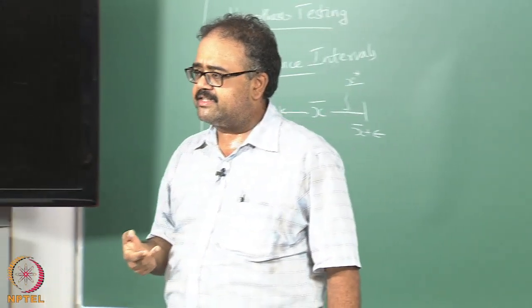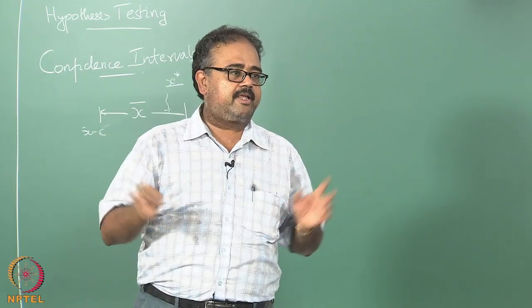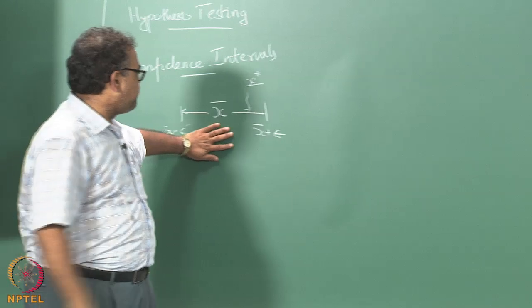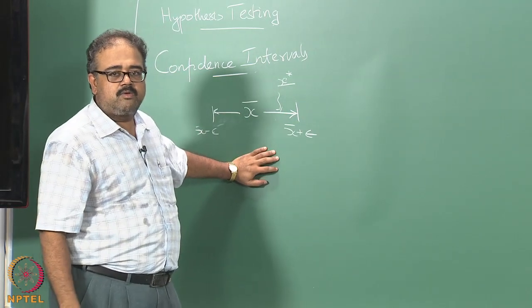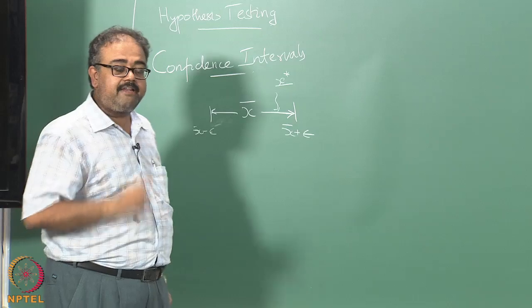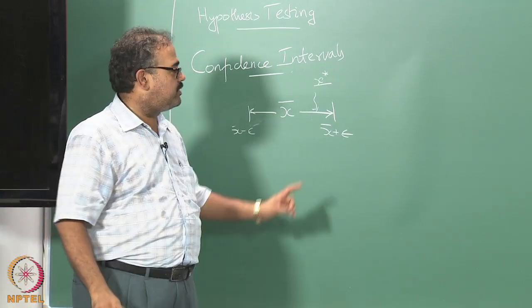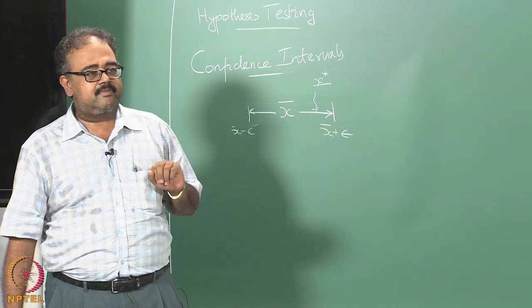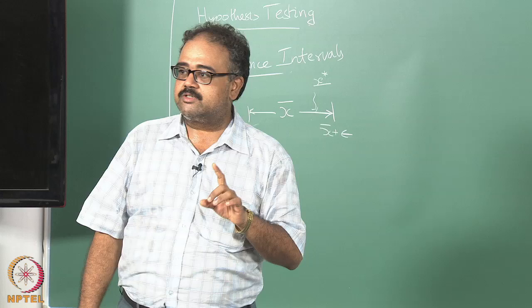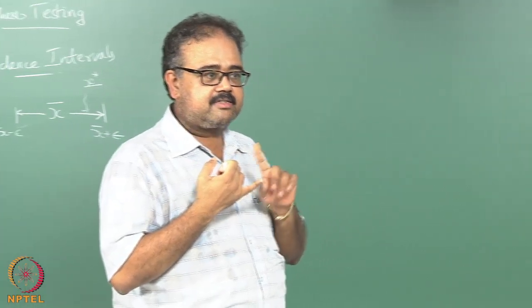So in fact, the confidence interval — essentially the amount of confidence you have in this interval — means the following. In what fraction of the samples of size n that I draw: suppose I keep drawing samples of size n and I tell you that I give you a 95 percent confidence interval. What does this mean? In 95 percent of samples of size n, x star will lie within plus or minus epsilon of x bar.